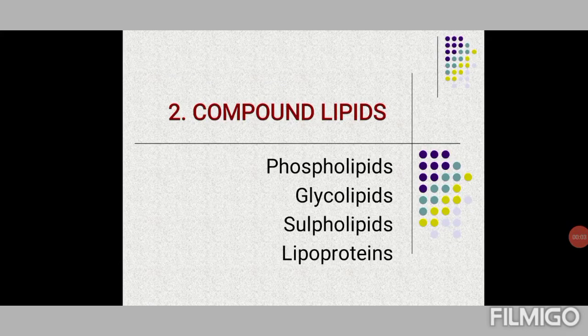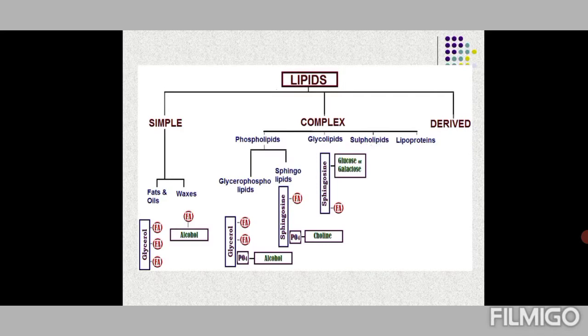Now we move on to compound lipids, the second category of lipids, under which phospholipids, glycolipids, sulfolipids, and lipoproteins are included. Lipoprotein will be dealt with in a separate session. We have completed simple lipids and have started complex lipids. This is phospholipids — the glycerophospholipids and sphingophospholipids.